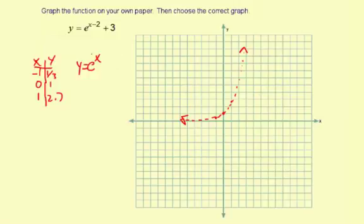Now let's look at the shift. x minus 2, that means it's going to be 2 to the right. And then the plus 3 means 3 up. So we're going to take each of these three points that we plotted and shift them and also shift the asymptote.